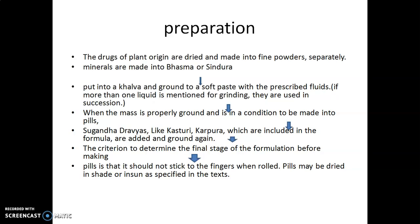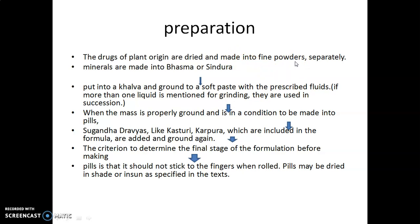Let's see how the traditional Guttika or Vati is prepared. The drugs of plant origin are dried and made into fine powder separately. Minerals are made into Bhashma or Shindura.